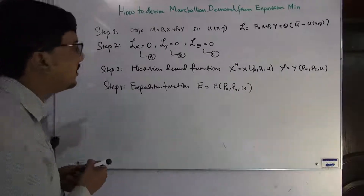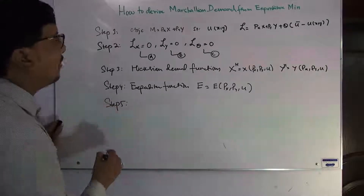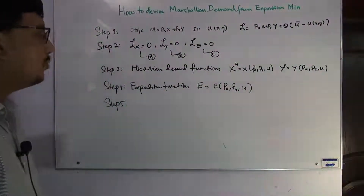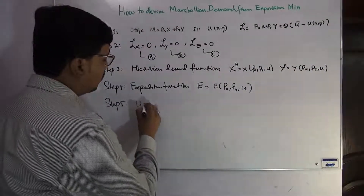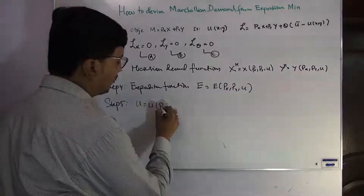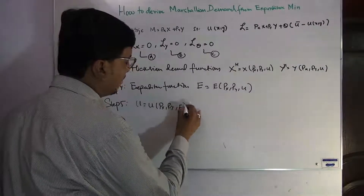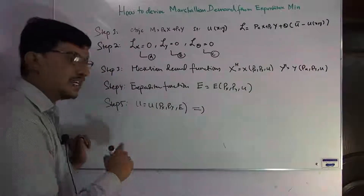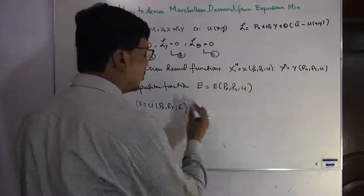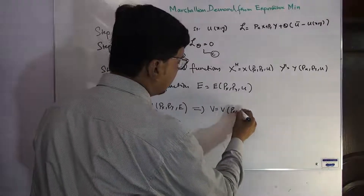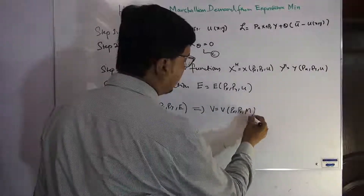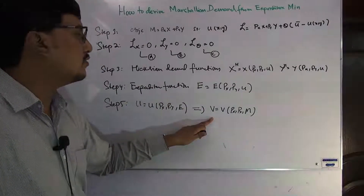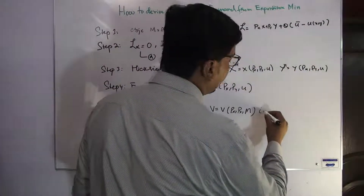Now we move to step number five, which is very important, because after this we will get the Marshallian demand function. We solve the expenditure function for U to make the indirect utility function. So U will be a function of price of X, price of Y, and expenditure E. We then convert the notation: U becomes V and E becomes M, giving us the indirect utility function V(Px, Py, M).